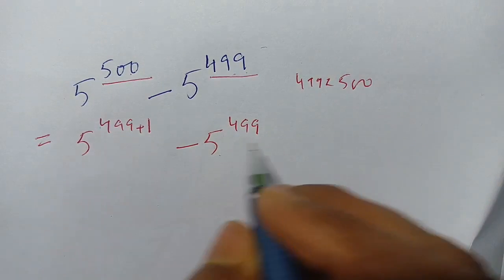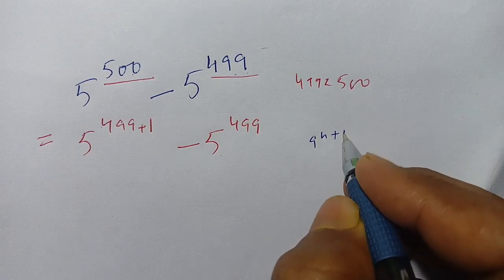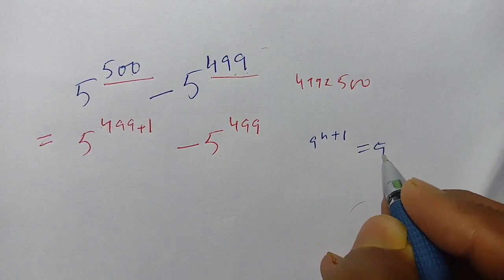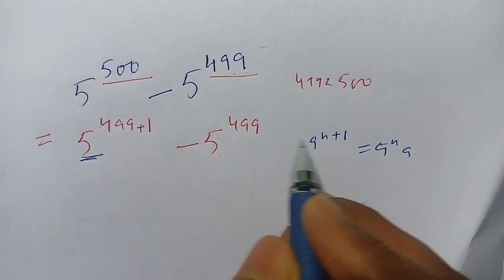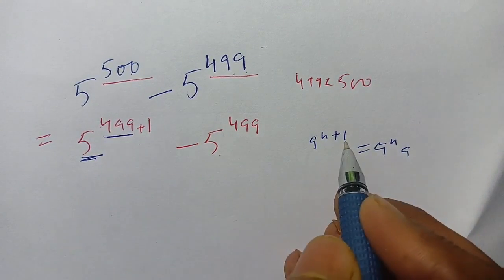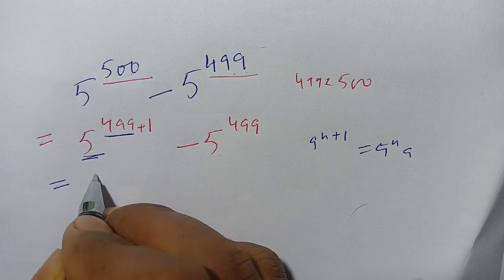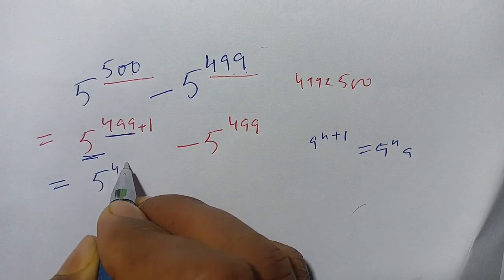We know that when a power n plus 1 can be written as a power n times a, here a is 5 and in place of n is 499 and 1 is 1. Now we apply this: we get 5 power 499 times 5 minus 5 power 499.